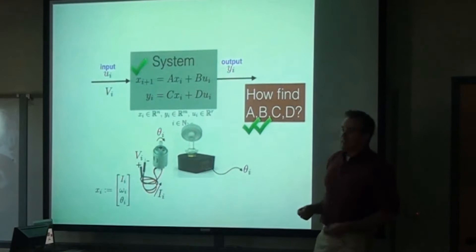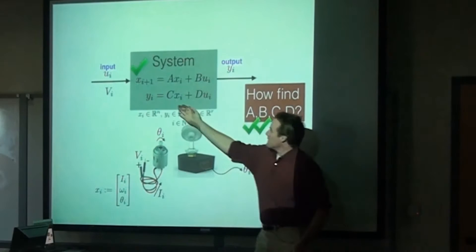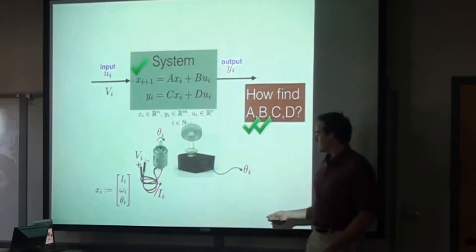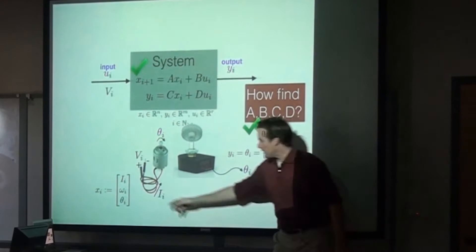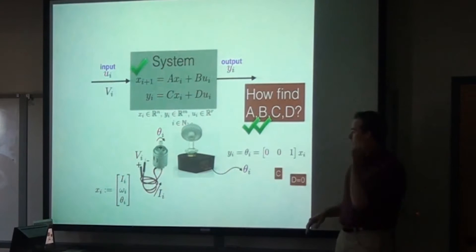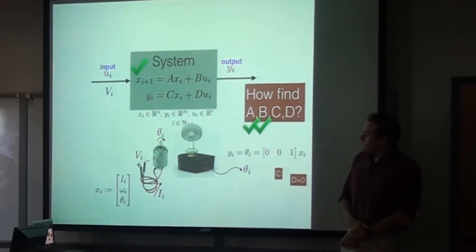C and D are how you turn your state and your input into a measurement. In this case we're just measuring theta I — that's our one measurement, one sensor measuring one piece of the state. So YI is just theta I. It's 001 times the state vector — that picks out just this one element. C is this row vector and D is just zero.